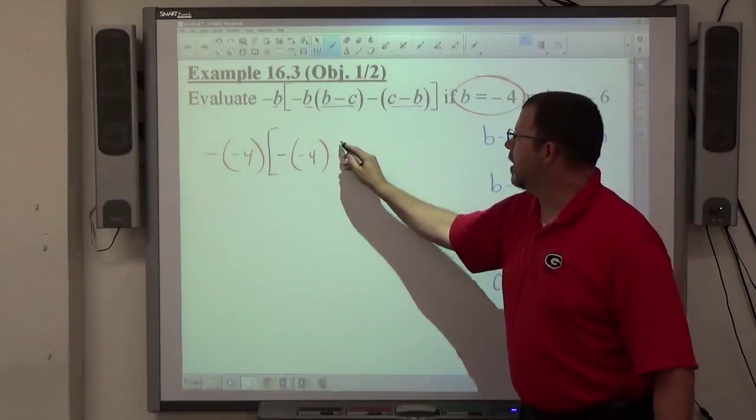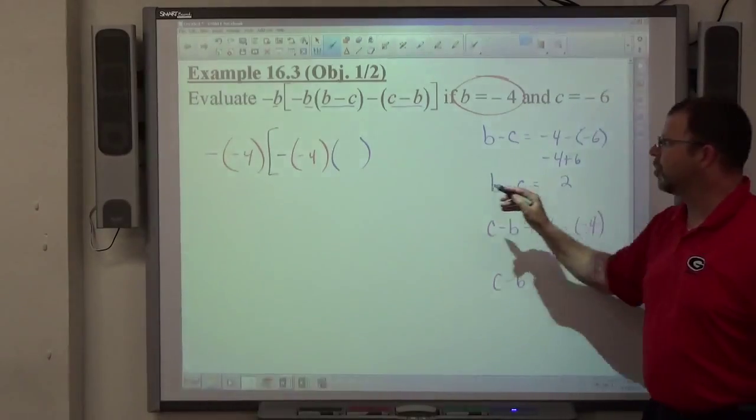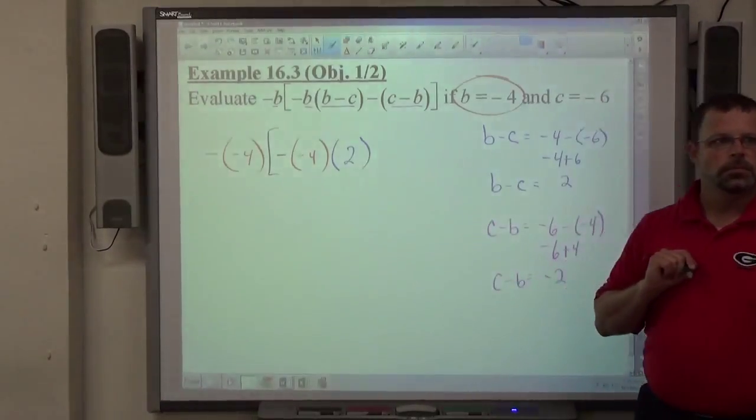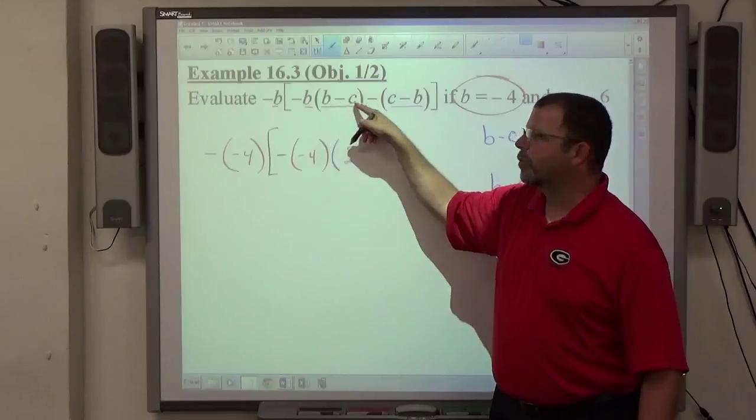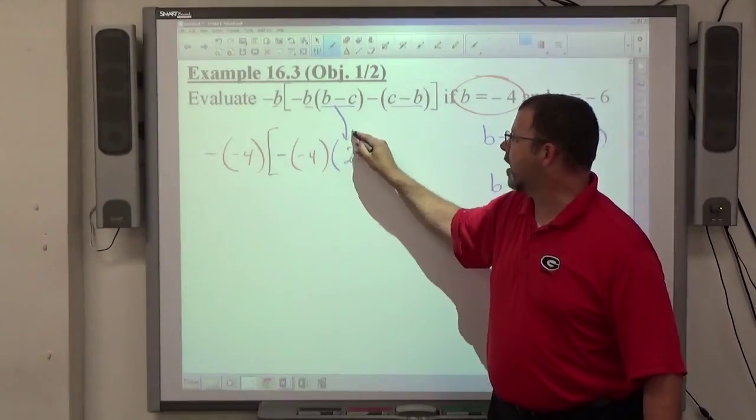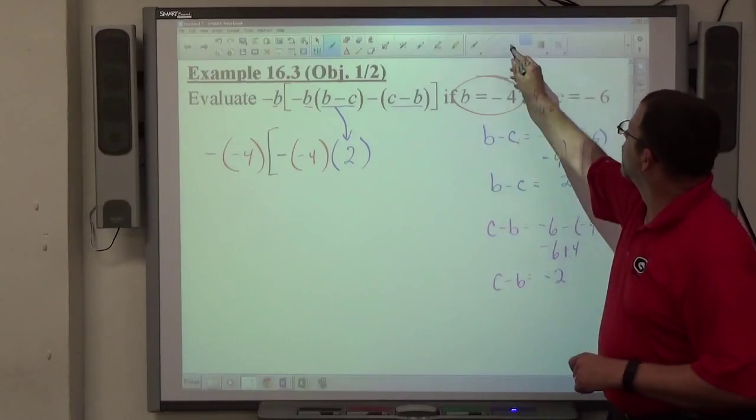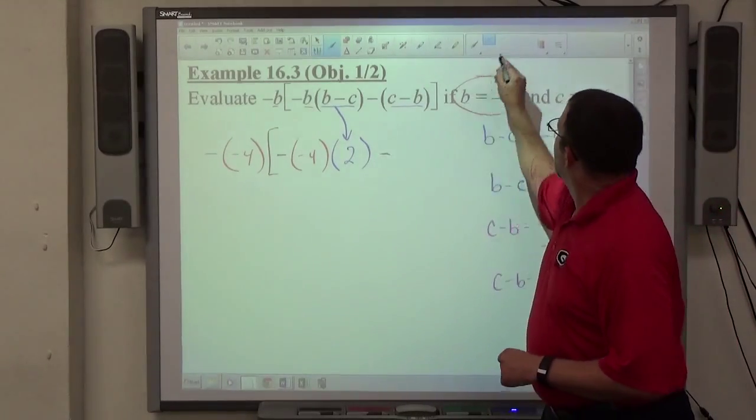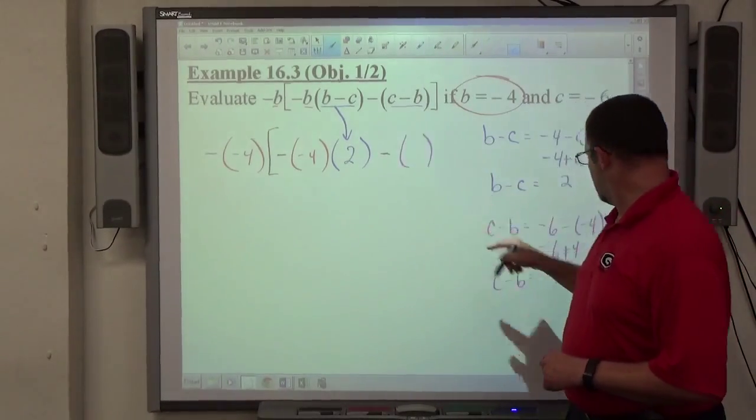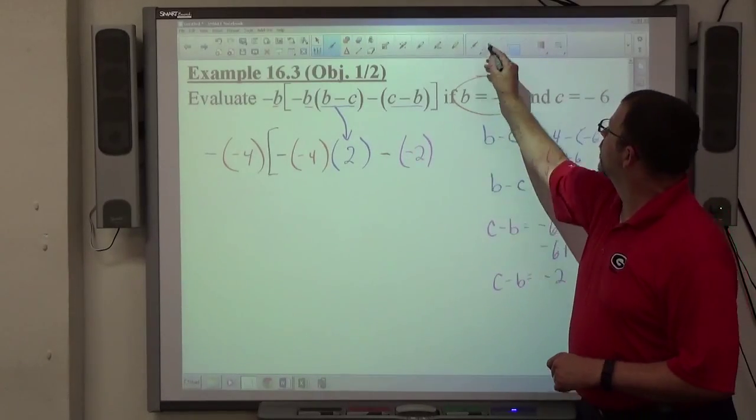Notice what I'm going to do here. B minus c equals 2, so I don't have to substitute the negative 4 and the negative 6 in for b and c. I've already evaluated b minus c, so I can just go ahead and throw that numerical value in. Then there's a minus sign in the expression, and then for c minus b I'm going to substitute a negative 2. Then I'm going to end my bracket.